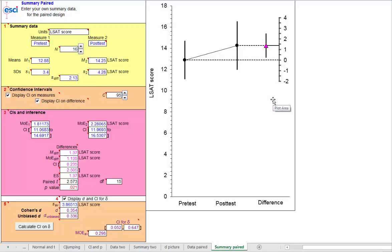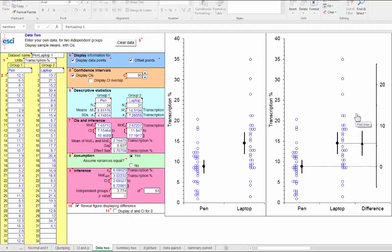So let's consider independent groups and paired. Which should you use? Well, it depends. Here we are back at data two, seeing the data for the first pen laptop study, two independent groups. Independent groups is really the simplest design. Each participant is tested under just one of the levels of the independent variable, and because the pen and laptop data come from independent groups, these two sets of data are fully independent. Now, sometimes you have to use independent groups. If you're comparing male and female, or left-handers and right-handers, you need independent groups.